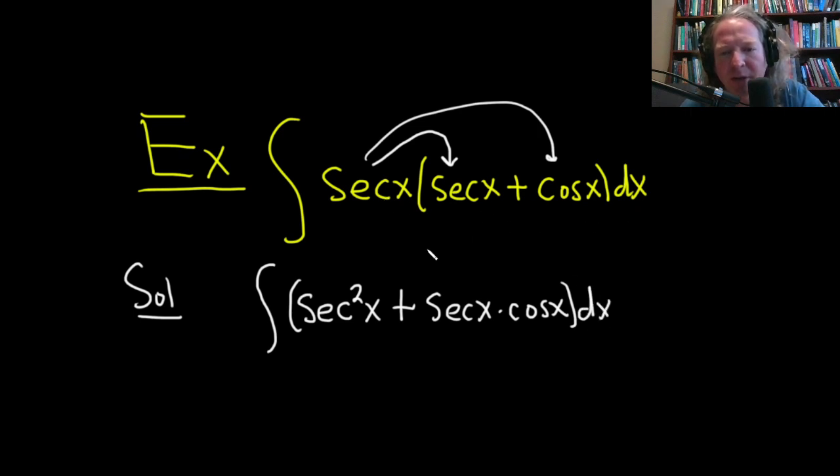So just start off by distributing because we don't really have an easy way to just immediately do this problem. So a good first step is to just take this and multiply it by each of these. So we need to think about each piece here before we proceed.